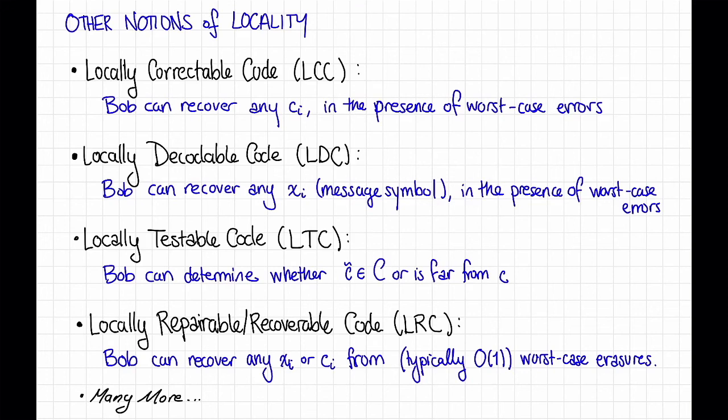Perhaps you want only a small piece of your data, but then it would be wasteful to decode the entire code word. That's the situation where locally repairable codes are useful. These things, LCCs, LDCs, and LTCs, also have lots of different applications, and they come up especially in complexity theory and cryptography. We'll see a few applications of these different types of locality in later videos. In the next few videos, though, we'll seek some construction of locally correctable codes with non-trivial parameters.